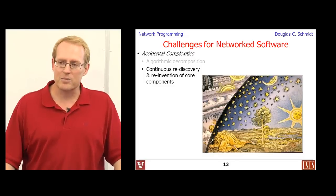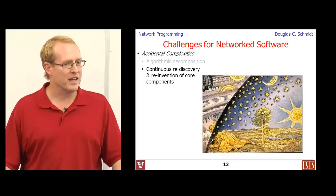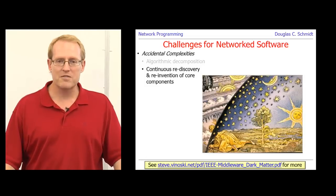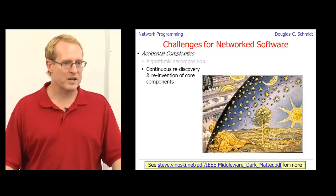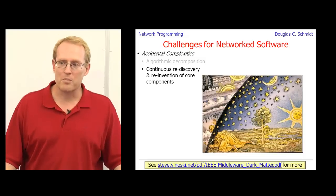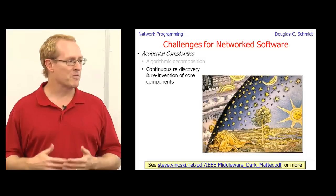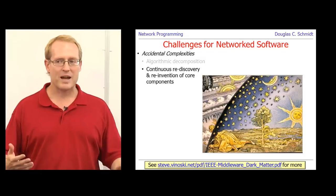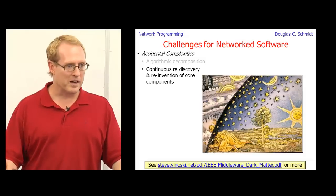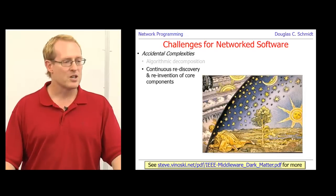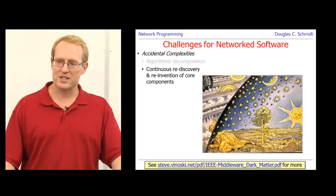Another common problem, another accidental complexity is people historically have had a tendency to reinvent and rediscover a lot of the core services and components and infrastructure in the domain of networking. There's a colleague of mine named Steve Vinosky. We wrote columns together on many topics for various magazines over the years. And he has this interesting article on what he calls middleware dark matter. And middleware dark matter is the fact that so many people have built their own networking infrastructure and used it in-house. At the time it might have made sense, but over time it becomes a maintenance nightmare. They can't keep up with the rate of evolution and enhancement that's coming from off-the-shelf solutions. And it's a big problem. So those are some examples of accidental complexities with network software.